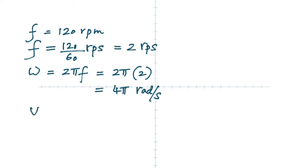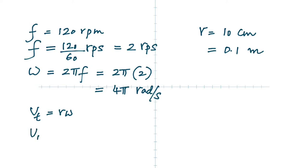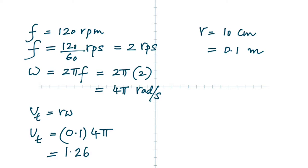Once you get omega, you can find the linear velocity because it's R times omega. The radius is 10 centimeters — but centimeters don't work, so change it to 0.1 meters. Then it's 0.1 times 4π, which gives 1.26 meters per second.